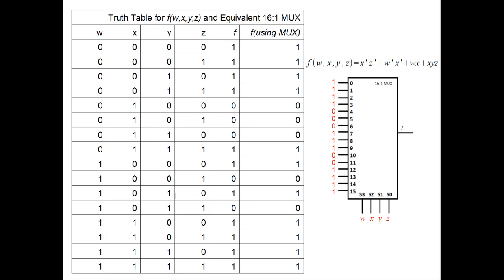The following is the truth table for f of wxyz and the equivalent 16 to 1 MUX. The four inputs for the function, wxyz, correspond to the select bits. The output of the function is the same as the output of the MUX. Therefore, the MUX is an accurate representation of the Boolean function.